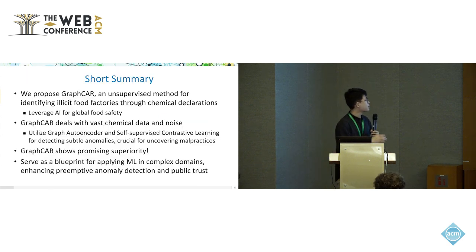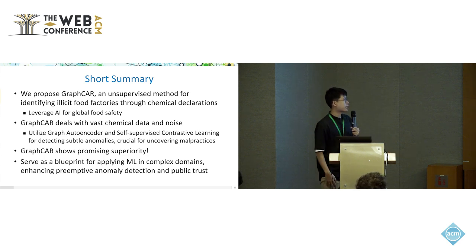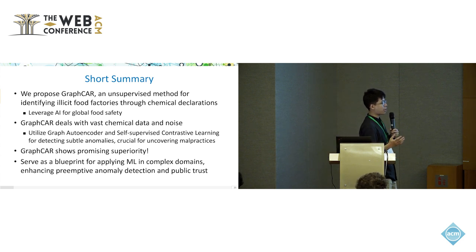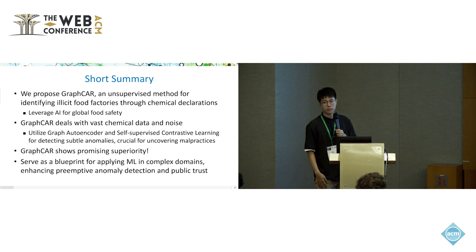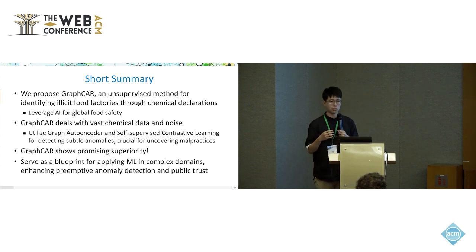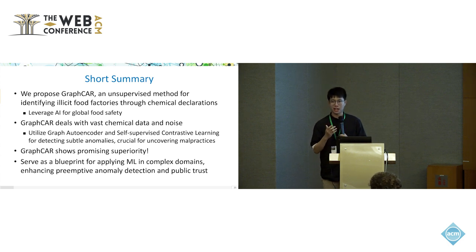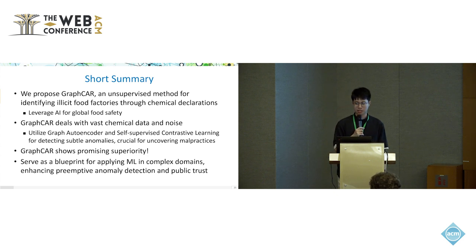In summary, we propose the Graph-CARD unsupervised method for identifying illicit food factories. Our proposed method can deal with vast chemical data and is robust to label noise, and it outperforms previous unsupervised detection methods. It also has a deployed system in collaboration with local authorities. That's all for today — I'm happy to take questions, though as I mentioned, I'm not one of the authors of this paper, so I'll answer as best I can.